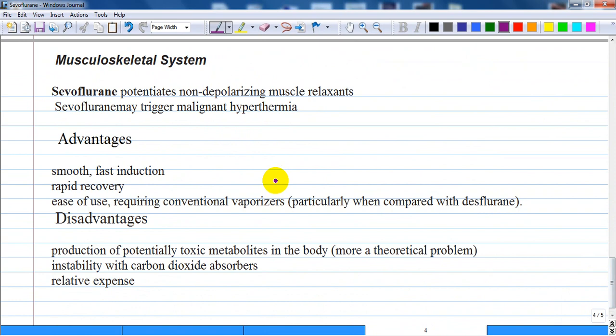Musculoskeletal system: sevoflurane potentiates non-depolarizing muscle relaxants and may trigger malignant hyperthermia in susceptible patients. But all the inhalatory anesthetics can produce malignant hyperthermia, and suxamethonium, to remember.